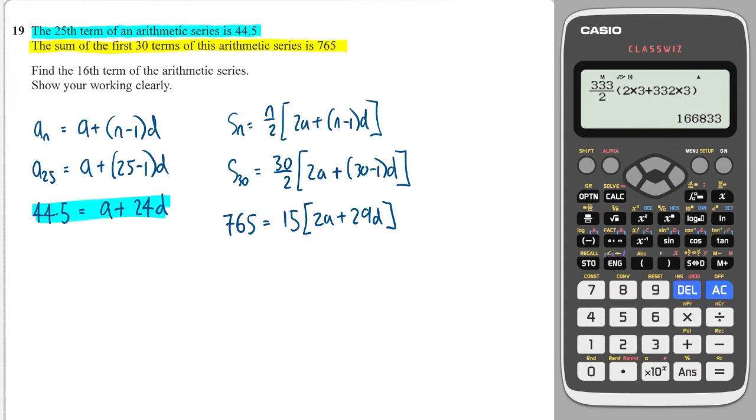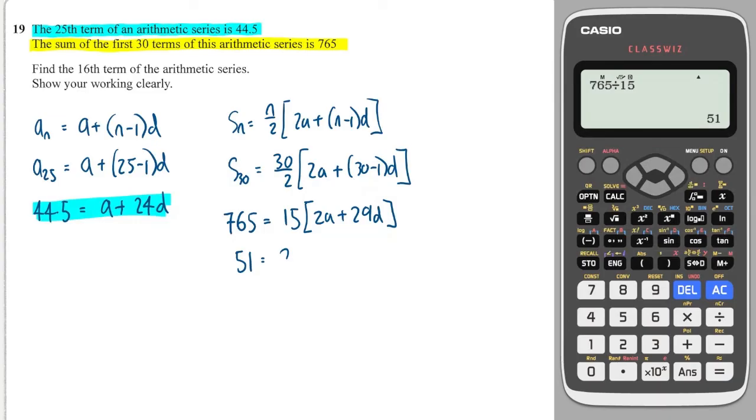So there's our second equation. Now, rather than expanding the brackets, I'm going to check to see if 765 divides 15. And it does, we get 51. So I can divide both sides by 15, and I get 51 is equal to 2a plus 29d. Okay, great. So there is our second equation.